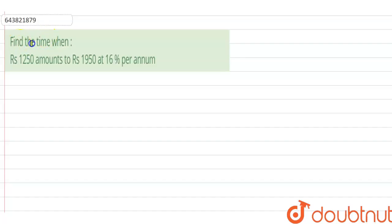Hi guys, we have a question right now. The question is: find the time when rupees 1250 amounts to rupees 1950 at 16% per annum.